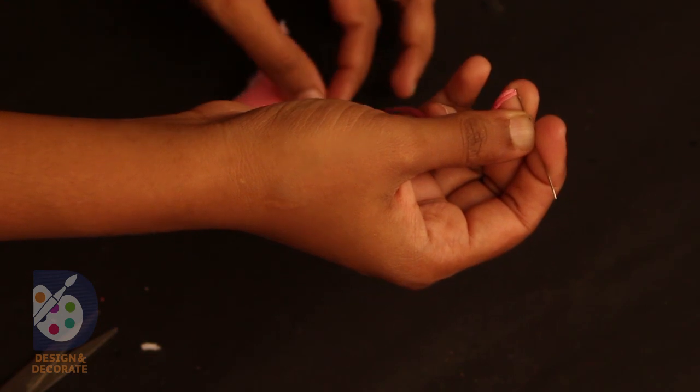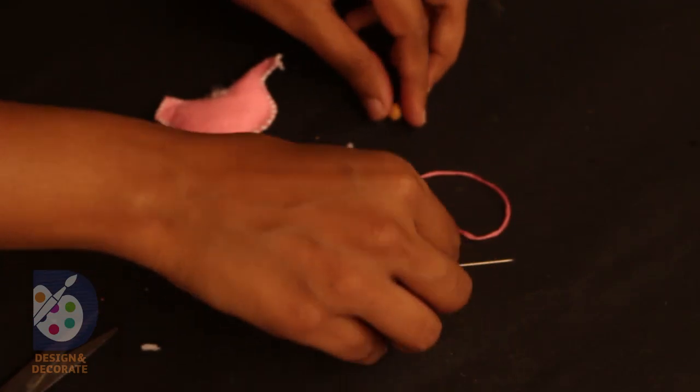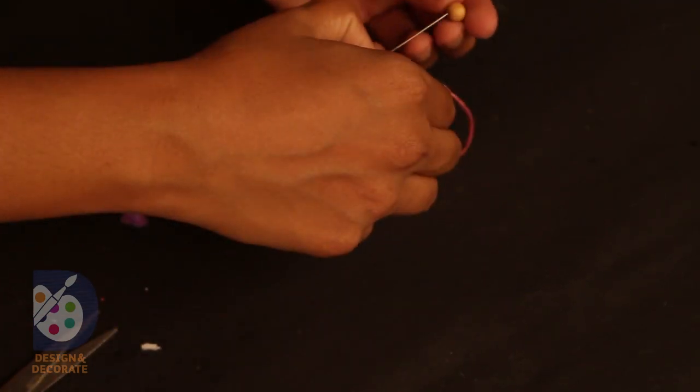After closing the space, insert the beads in the pom pom balls like this. Now place it inside the key chain loop.